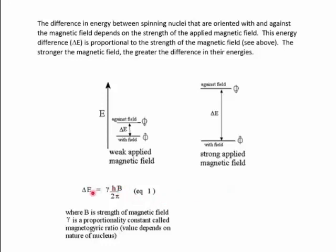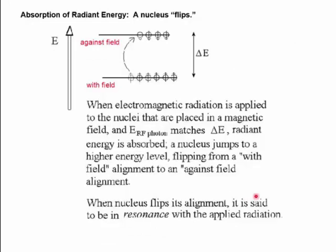When electromagnetic radiation is applied to nuclei placed in a magnetic field, and the energy of the RF photon matches delta E, radiant energy is absorbed. The nucleus in the with-field alignment jumps to the higher energy level corresponding to the against-field alignment. This jumping from one alignment to the other — the nucleus virtually flips from one alignment to the other. When the nucleus flips its alignment, it is said to be in resonance with the applied RF radiation.